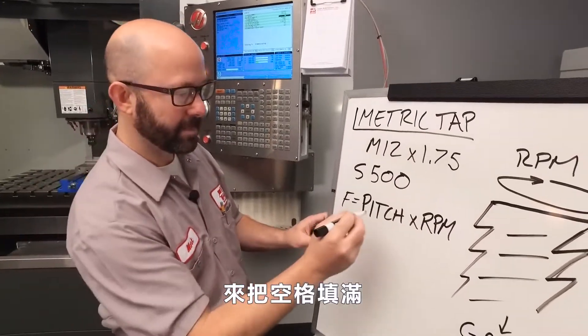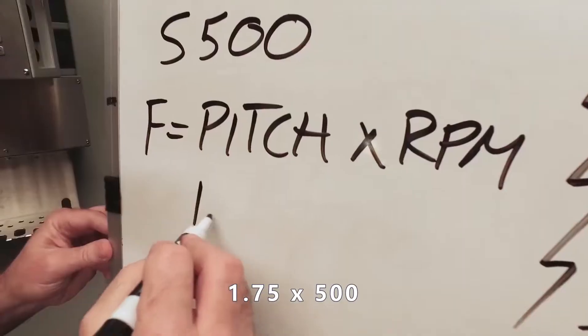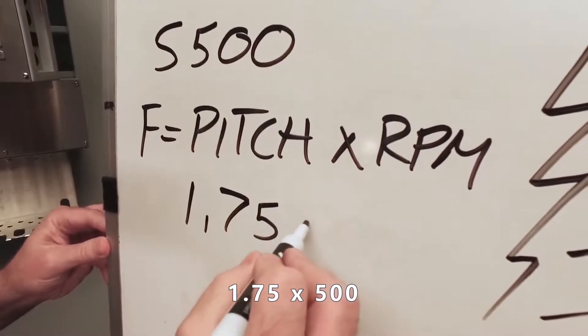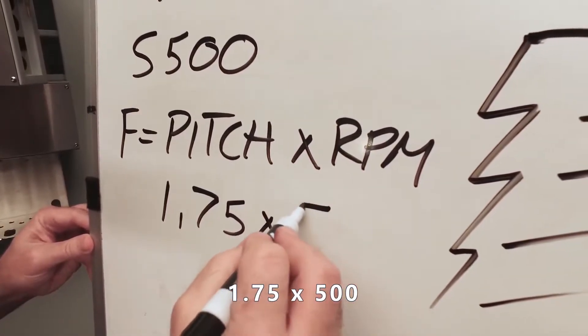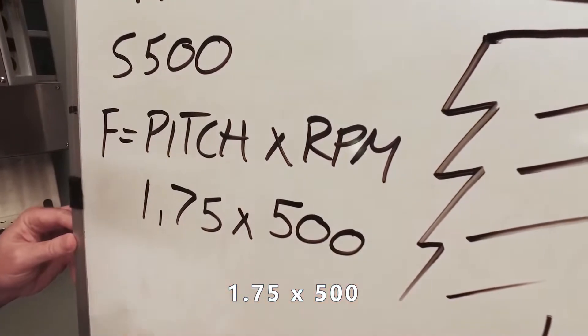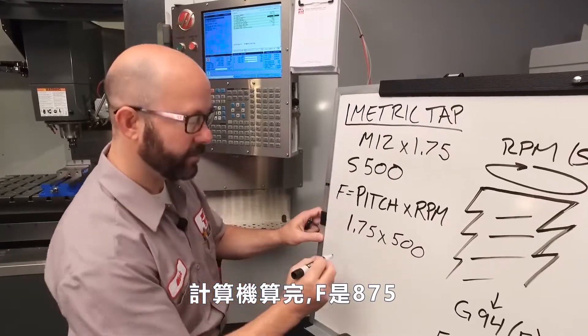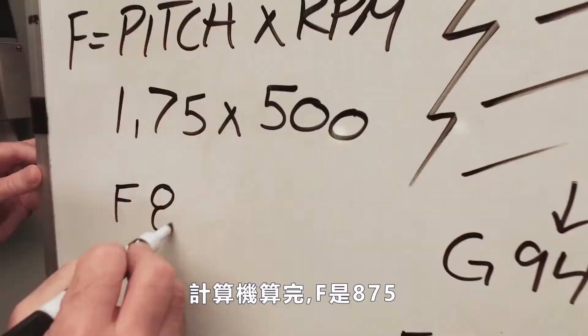Let's go ahead and fill in the formula. Pitch, 1.75, times RPM, which is 500. When we run that through a calculator, we're going to get a feed rate of F875.